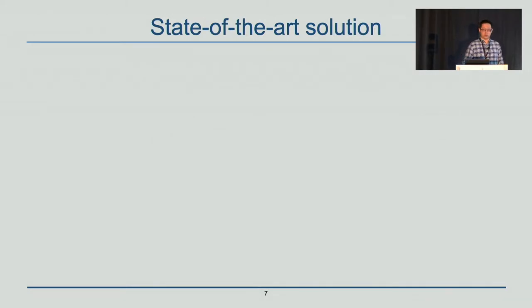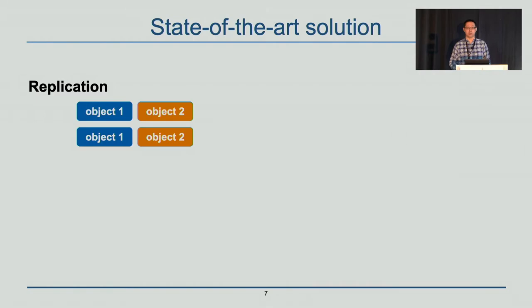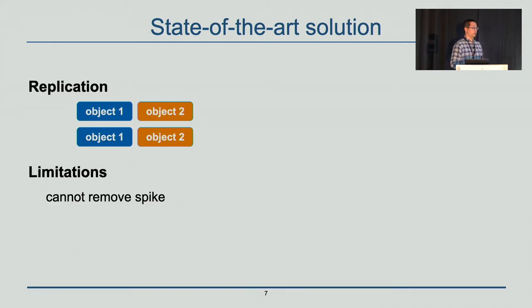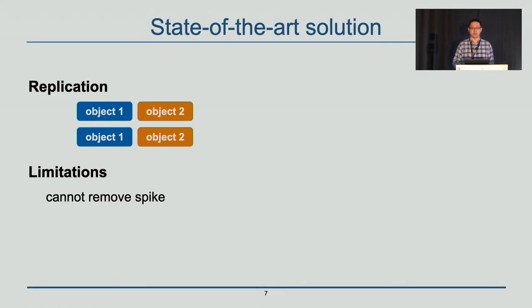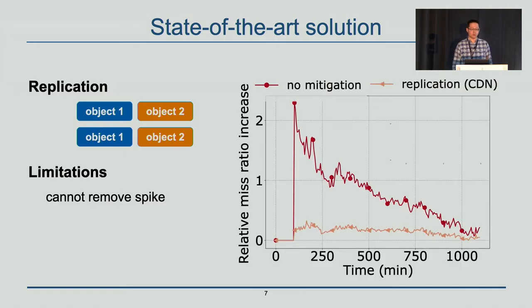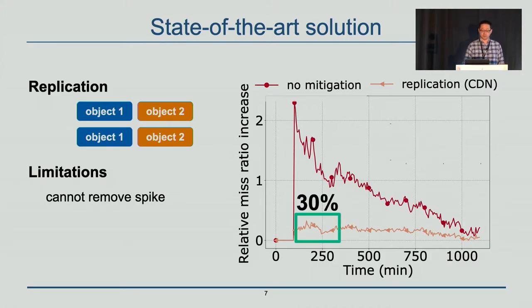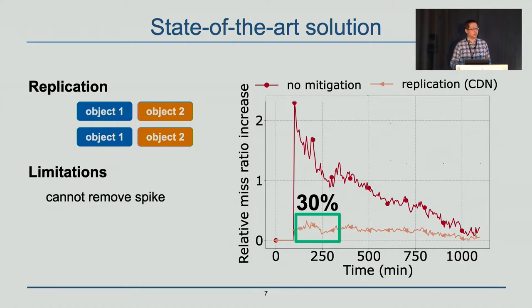The CDN solution to address unavailability is to use replication, which replicates objects onto multiple servers. However, replication comes with limitations. First, it cannot remove miss ratio spikes. In caching, replication is not sufficient to remove miss ratio spikes. We observe that compared to no replication, which has a miss ratio spike of over 200%, replication reduces the spike, but it still remains at around 30%.